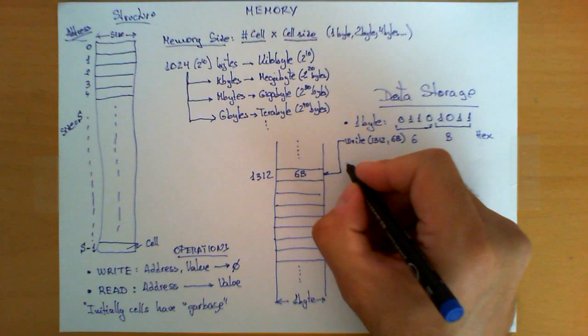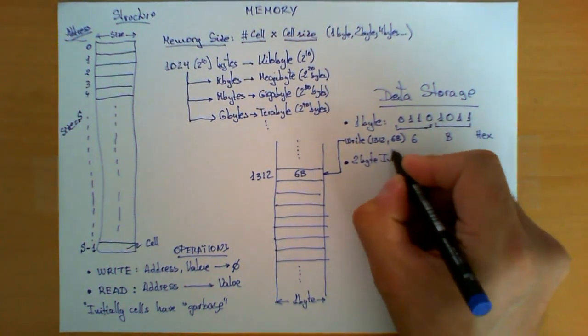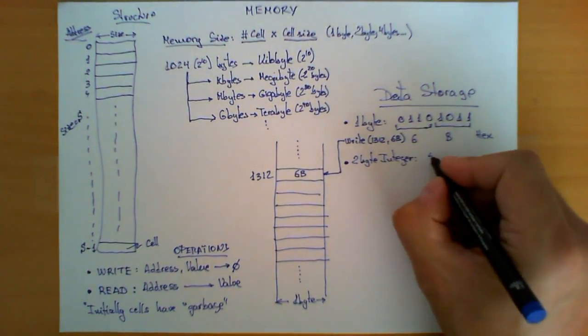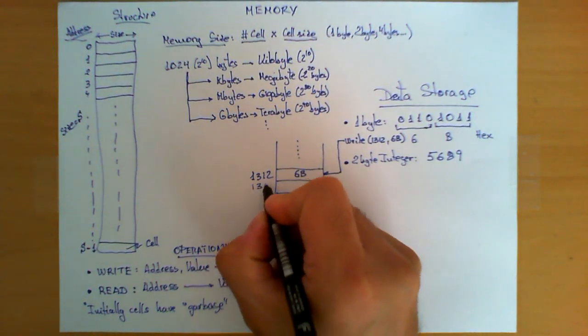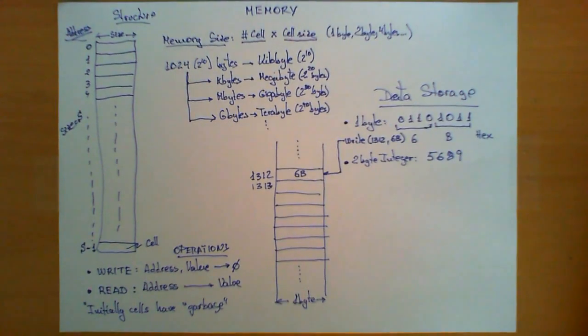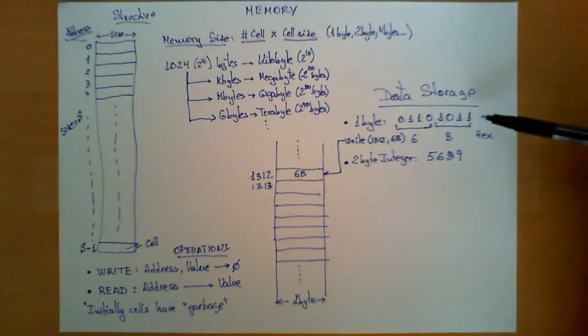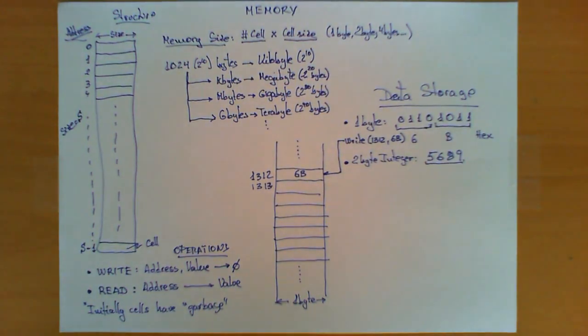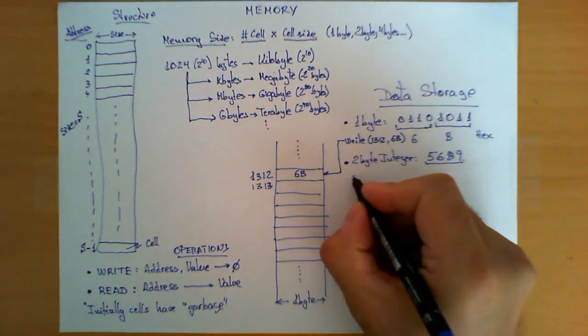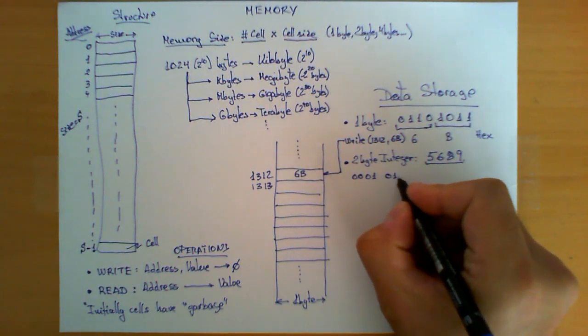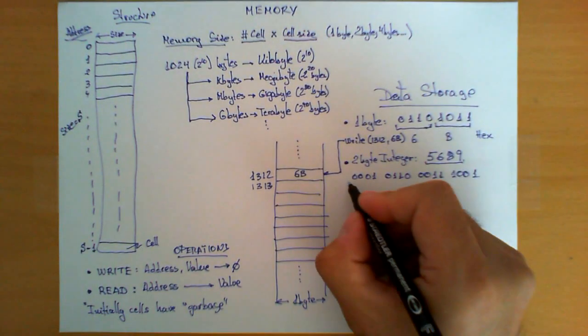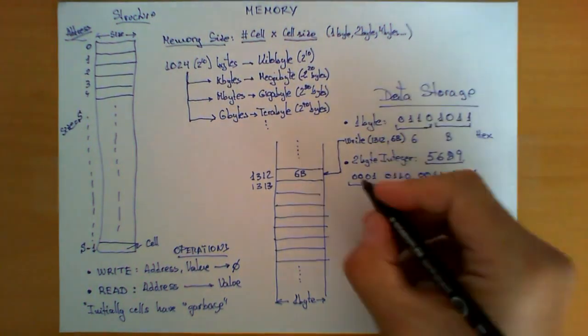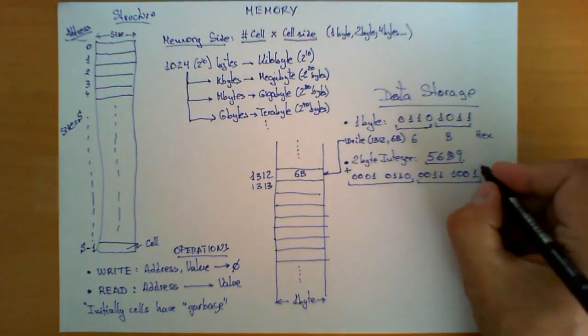A little bit more complicated: what if I want to store a 2-byte integer in memory? Let's assume it's the number 5689. How do I store this integer into memory at position 1313? I basically apply the same trick, but with a little twist. First, I need to know what is the binary representation of this number. If I translate this to binary, you end up with the sequence 00101100 00111001.